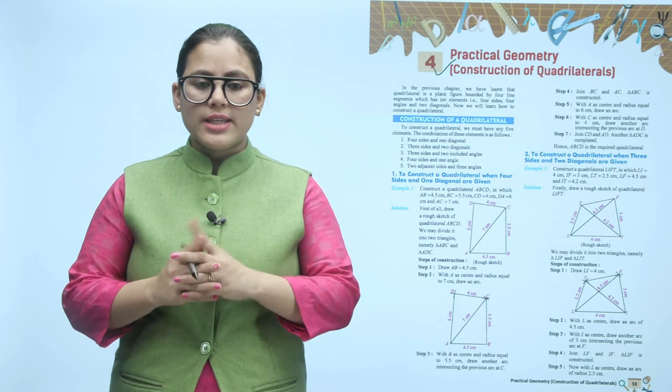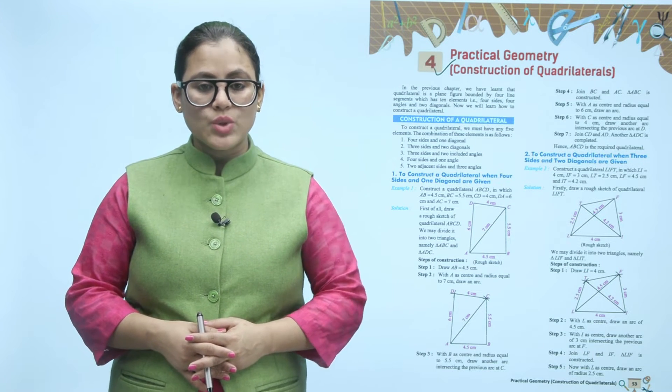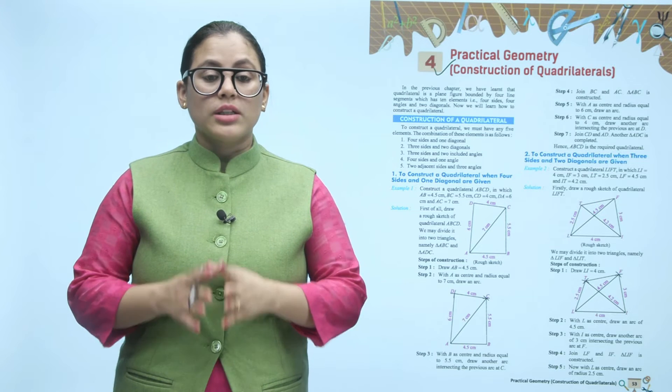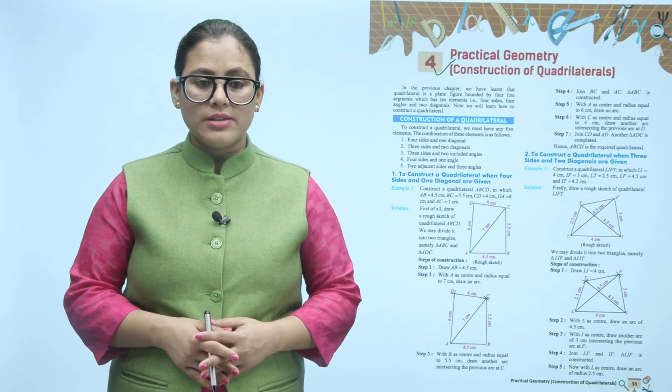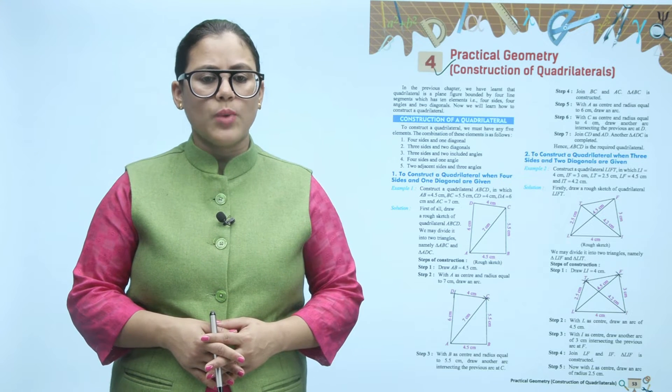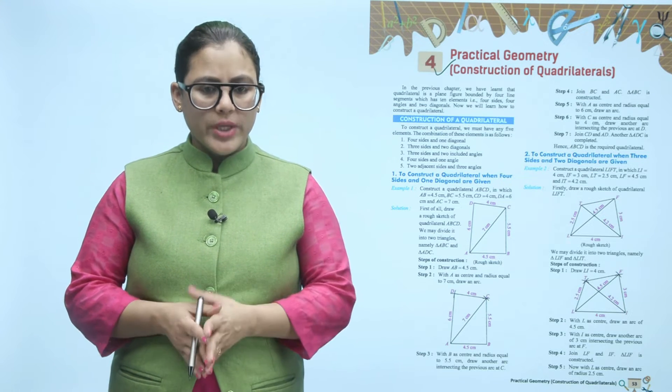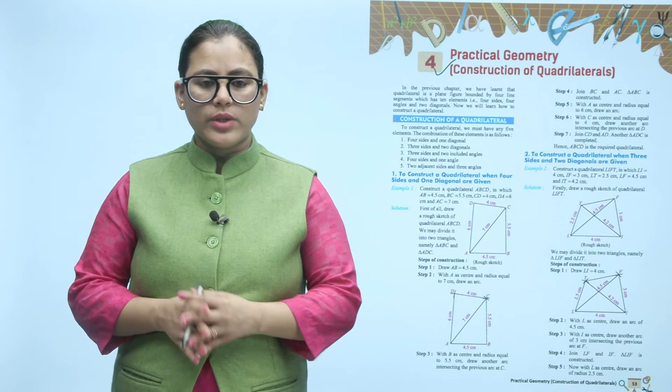The five combinations are: four sides and one diagonal; three sides and two diagonals; three sides and two included angles; four sides and one angle; and two adjacent sides and three angles.